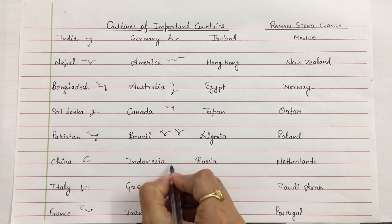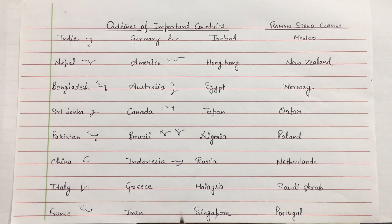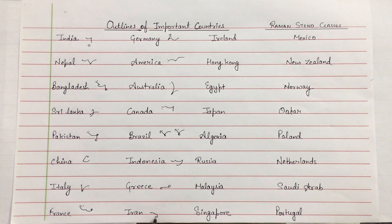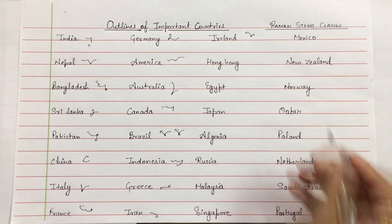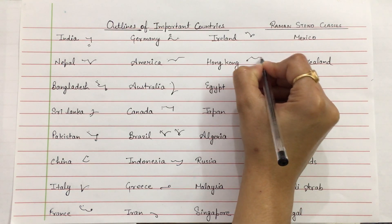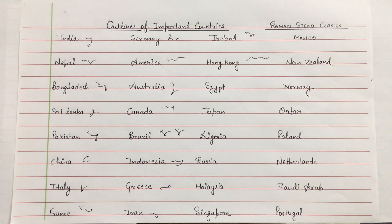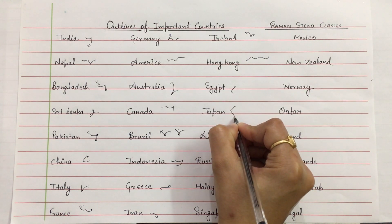Indonesia. Greece. Then Iran. Then Ireland. Hong Kong. Then Japan — above the line we will keep.